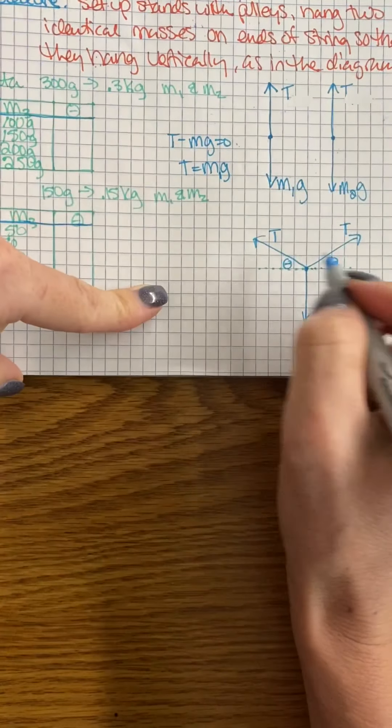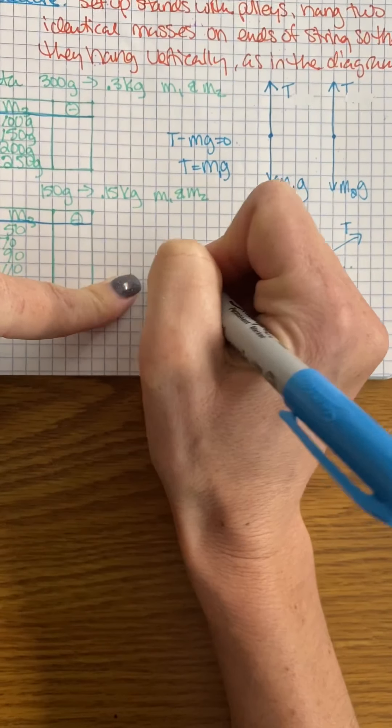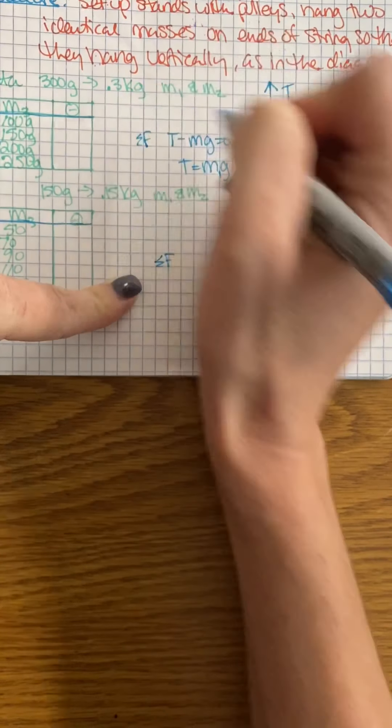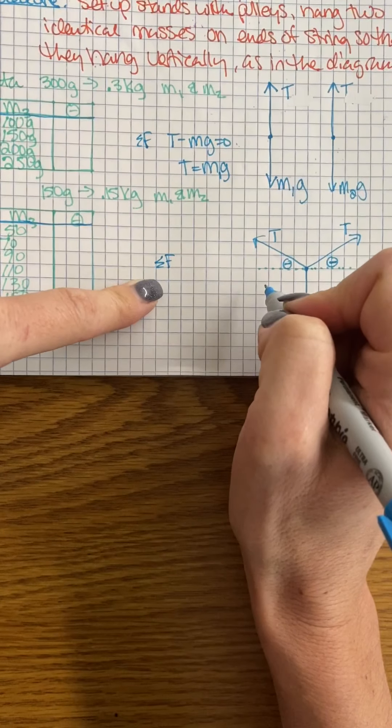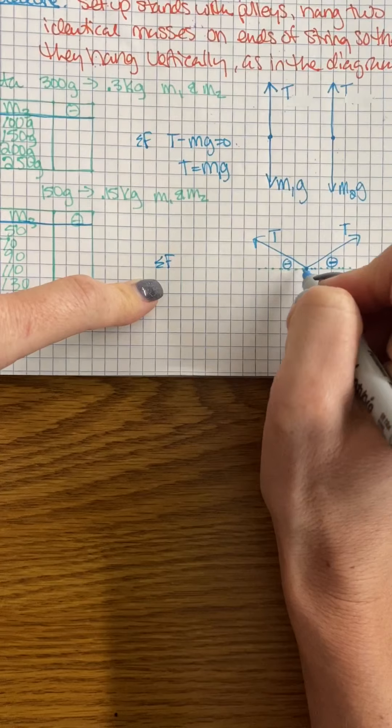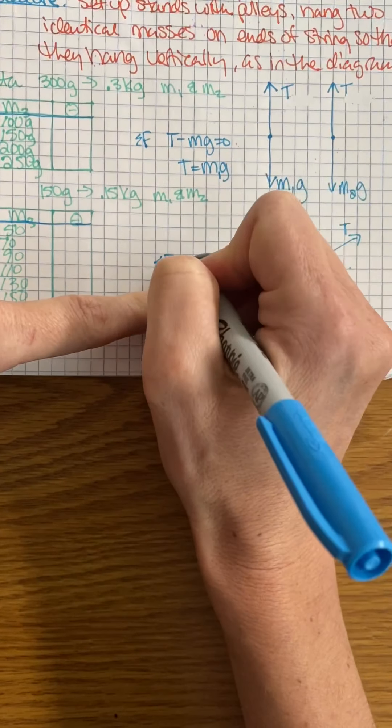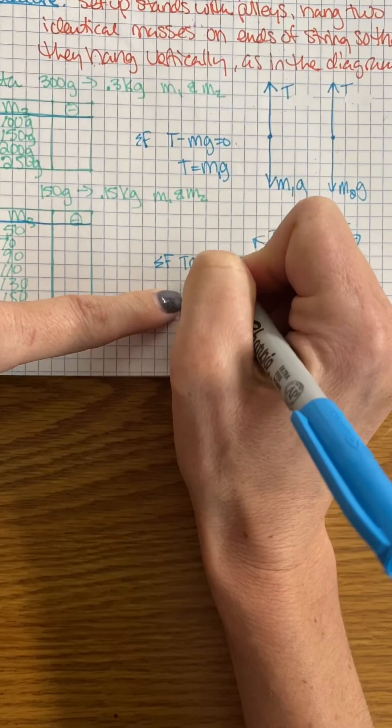I have two in the horizontal direction. I'm going to be using cosine, so T cosine theta is going to be equal to T cosine theta on this side.